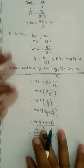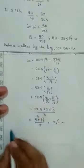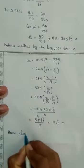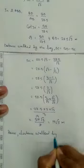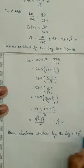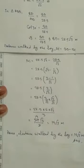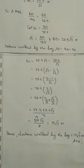Hence, the distance walked by the boy is equal to 19 root 3 meter. That is the answer. I hope you understood. Next, students, similarly try to solve questions up to number 10. Try it. Okay, bye.